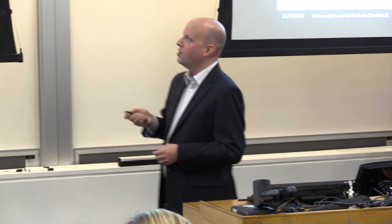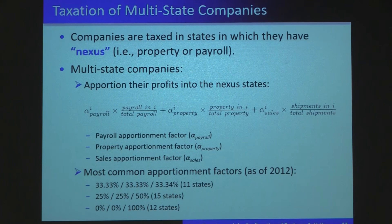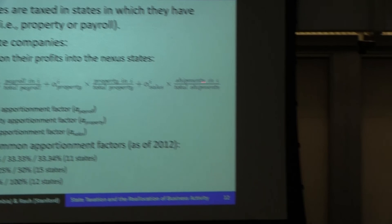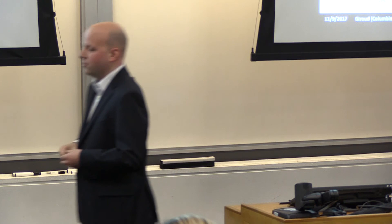Here is the agenda for the remainder of this presentation. I will first give a quick crash course on the taxation of multi-state companies, which as you will see is not entirely trivial. Then I will briefly go over the data, show the results, and conclude. The general principle is that companies have to pay state taxes in those states in which they have what is called nexus — a firm has nexus in a state if it has either payroll or property there. For companies with nexus in more than one state, those companies have to apportion their profits across the nexus states according to a formula called the apportionment formula.